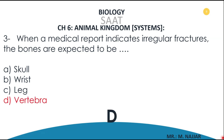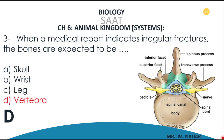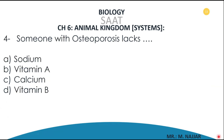If you look at the structure of the vertebra, it has many sutures and extensions, so irregular fractures, especially in the spine, occur in the vertebra. Question number four: someone with osteoporosis lacks A) sodium, B) vitamin A, C) calcium, D) vitamin B. The answer is C — calcium.